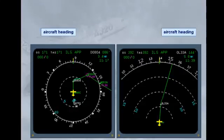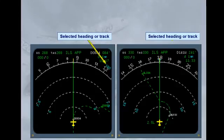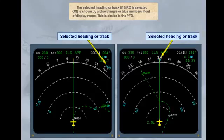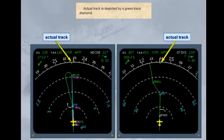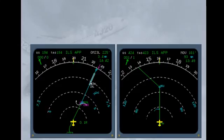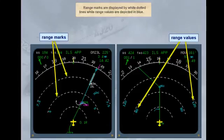The aircraft magnetic heading is given by a fixed yellow lubber line against the moving compass rose. The selected heading or track, if TRK is selected on, is shown by a blue triangle or blue numbers if out of display range — similar to the PFD. Actual track is depicted by a green track diamond. Range marks are displayed by white dotted lines, while range values are depicted in blue.